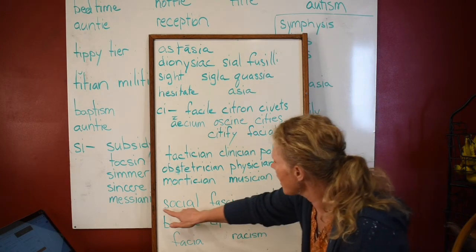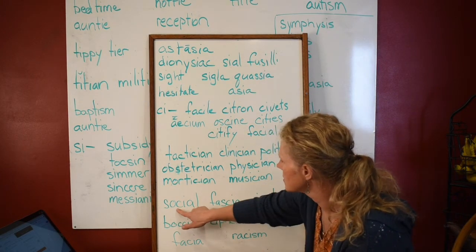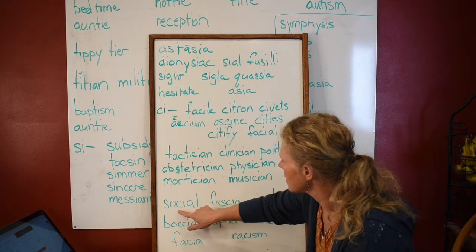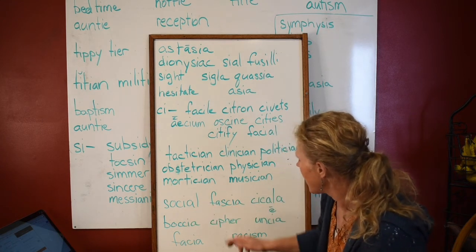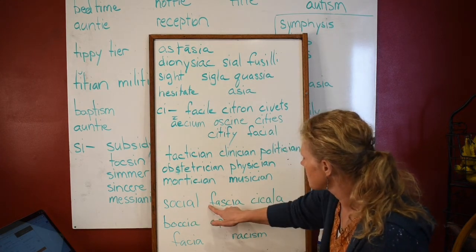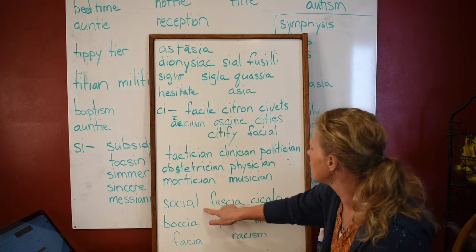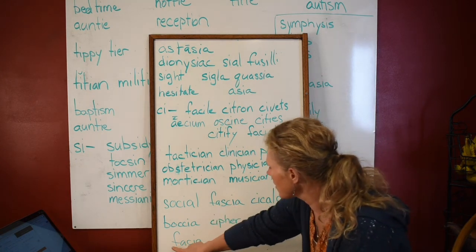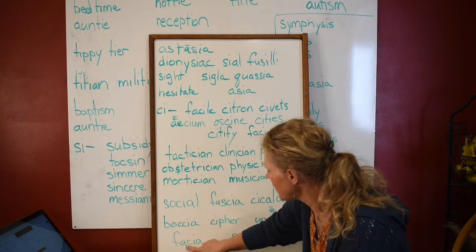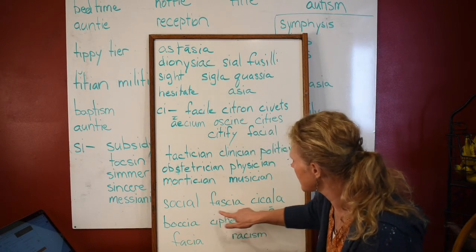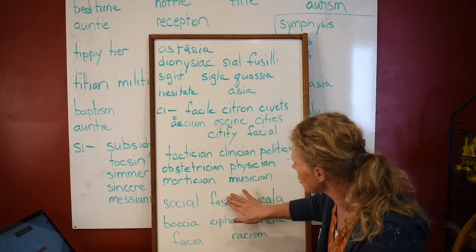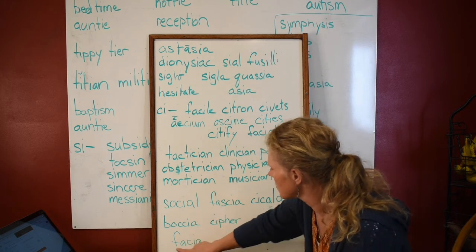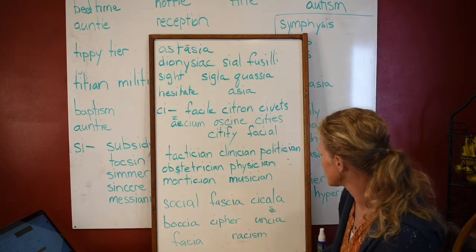So we have 'social' — see how this is followed by a vowel, and that is a digraph. And 'fascia' — look at how close these are. This is a closed syllable and this is an open syllable. So 'fascia' versus 'fascia' — they're pronounced differently. 'Fascia' with a closed syllable, 'fascia' with an open syllable.